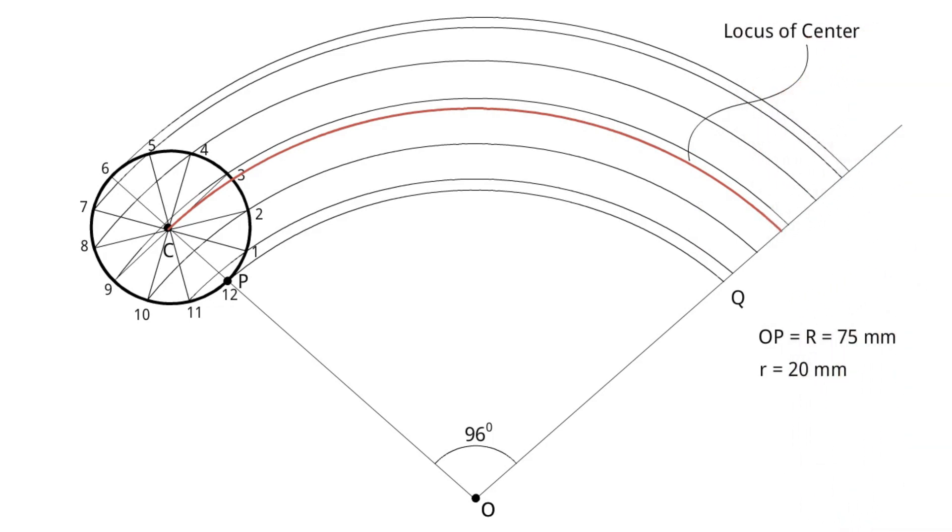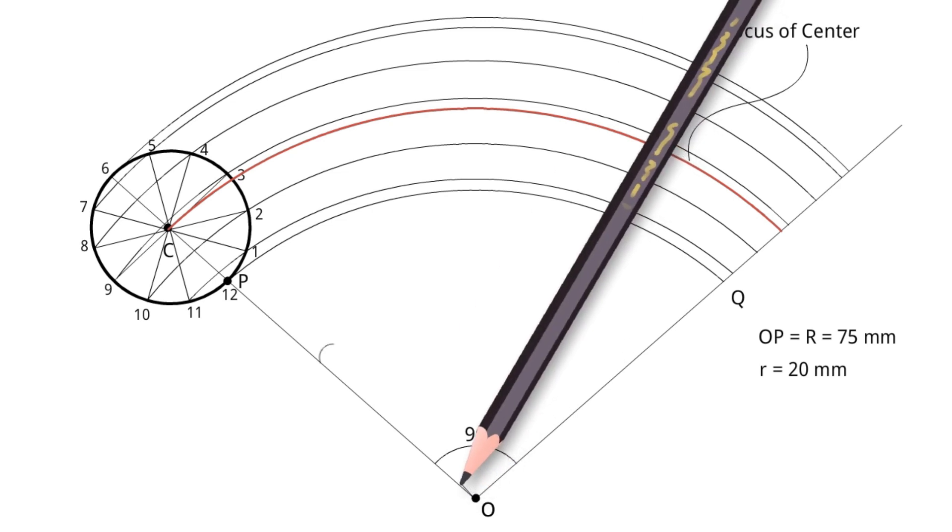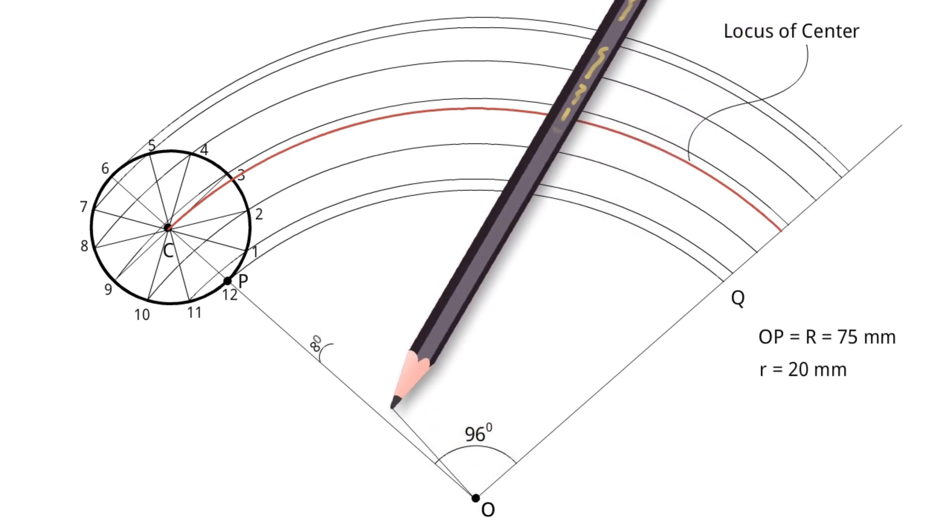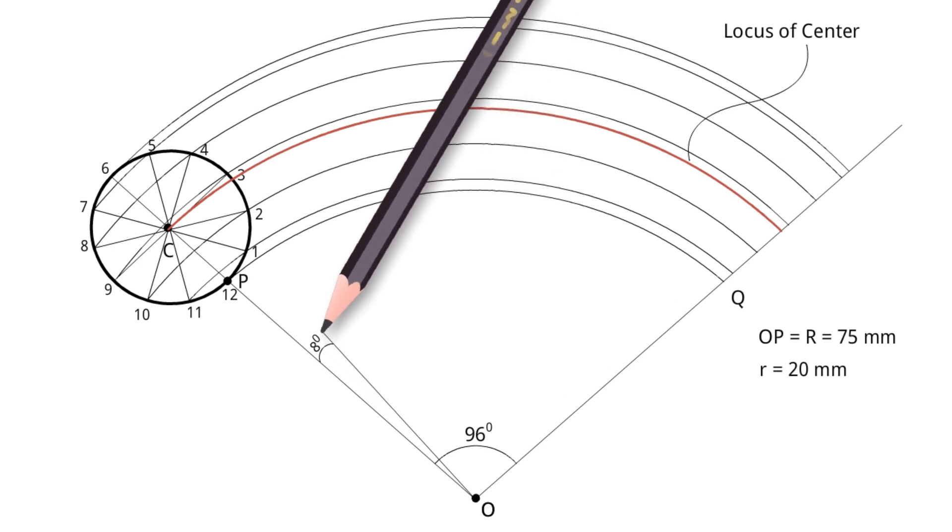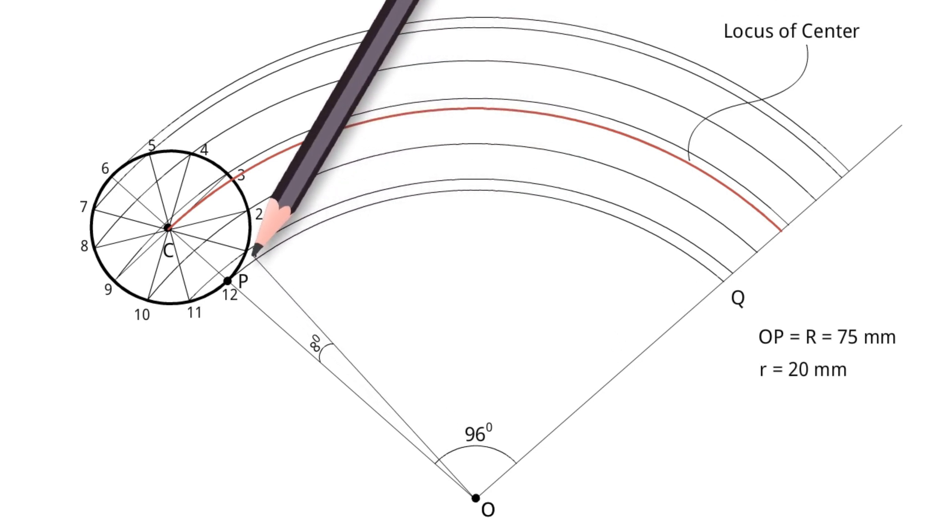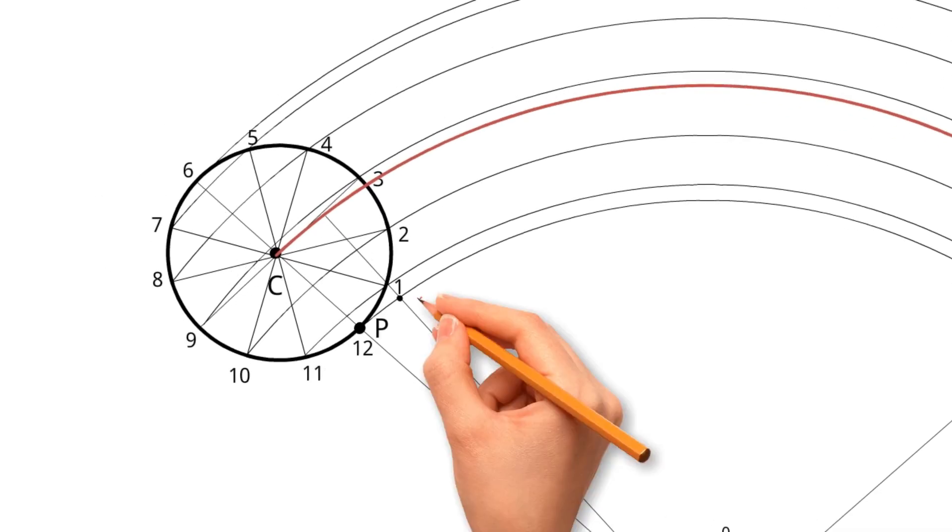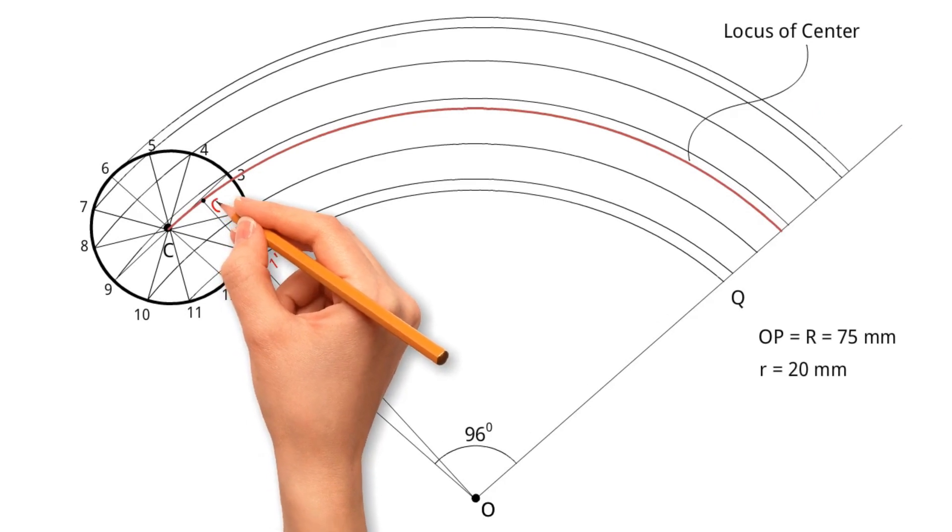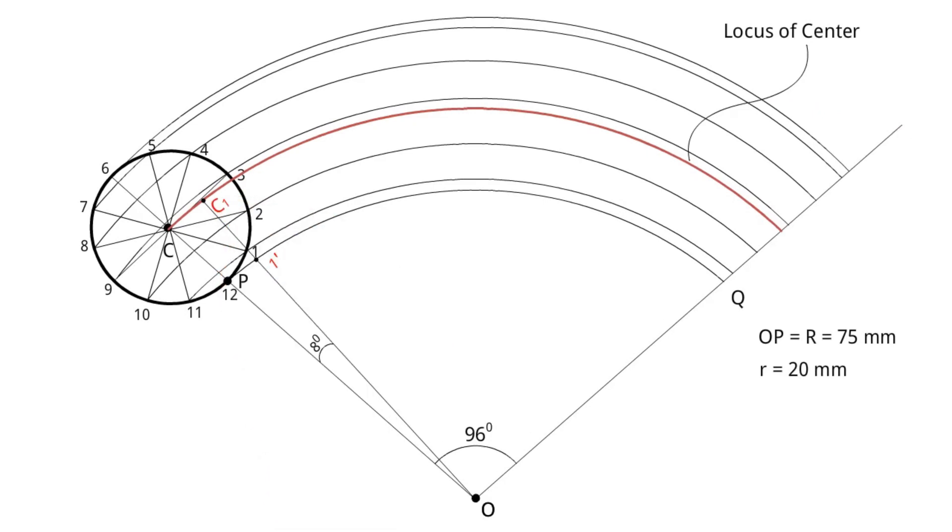Step 8. In order to divide the arc PQ into 12 equal parts, draw a line from point O at an angle of 8 degrees which intersects with base line of smaller circle and locus of center. Locate 1 dash and C1. Do the same up to 12 dash and C12.